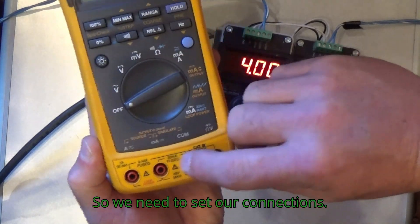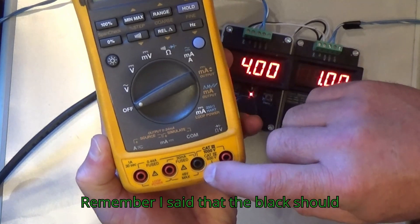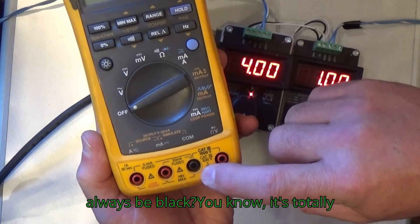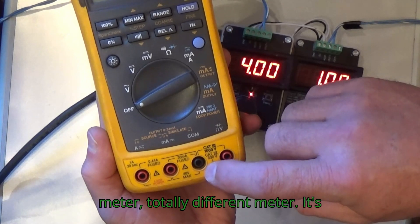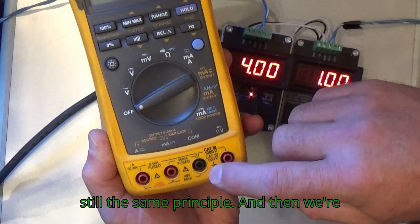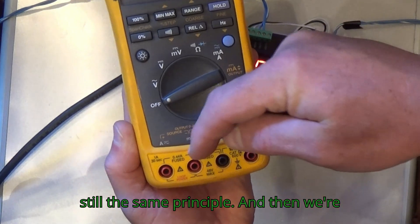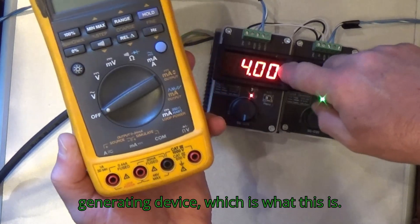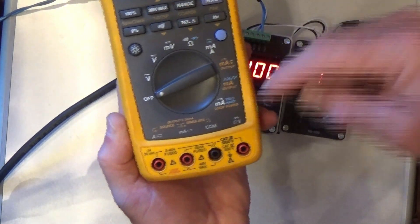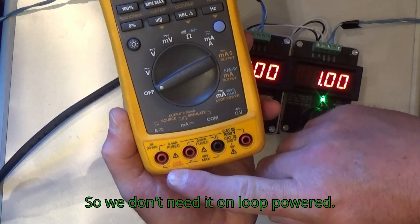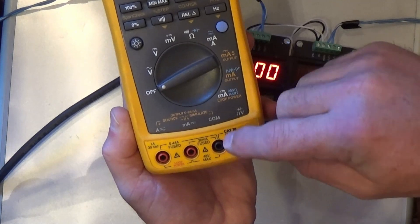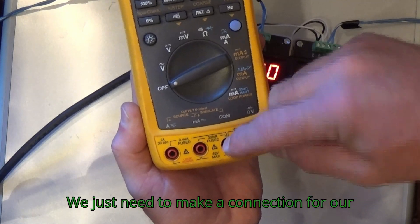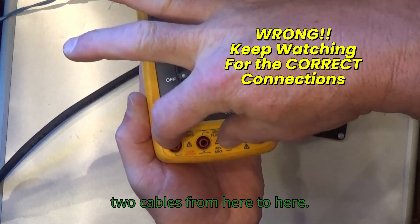So we need to set our connections. Remember I said that the black should always be black, even though it's a totally different meter, it's still the same principle. And then we're going to read a signal generating device, which is what this is. We don't need it on loop powered, we just need to make a connection for our two cables from here to here.